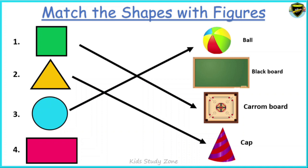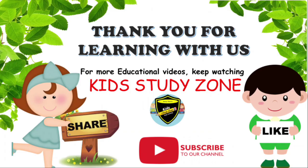Now let us see the fourth shape — this is a rectangle, and the option left is blackboard. That's the right answer! I hope you learned and understood about different shapes. Thank you so much for learning with us. Keep watching Kid Study Zone for more educational videos.